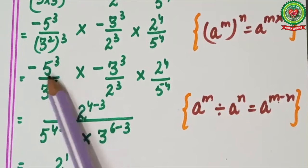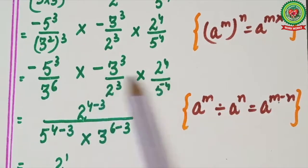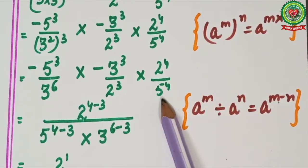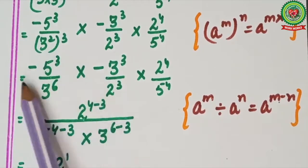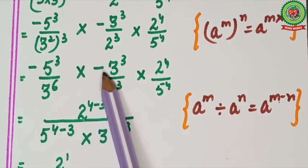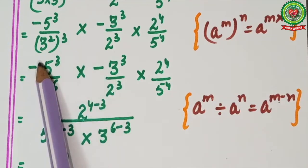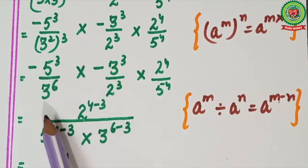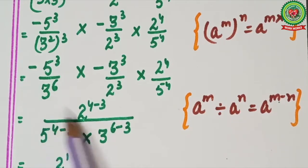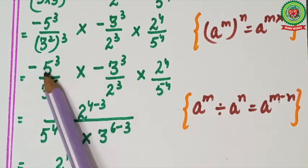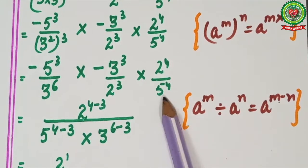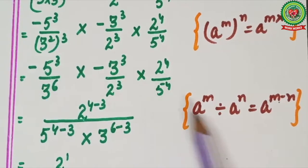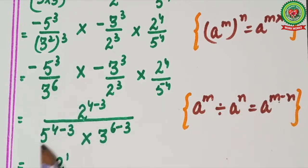Now, the minus sign appears two times, so two like signs give a plus sign. Looking at 5: 5 raised to power 3 is up and 5 raised to power 4 is down. The smaller power is 3, so it shifts down, giving 5 raised to power 4 minus 3 in the denominator.